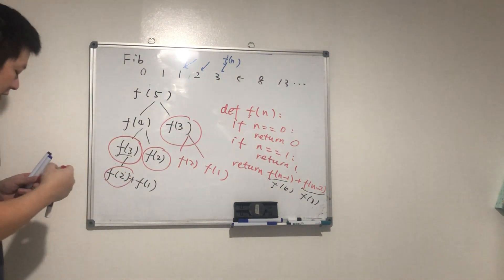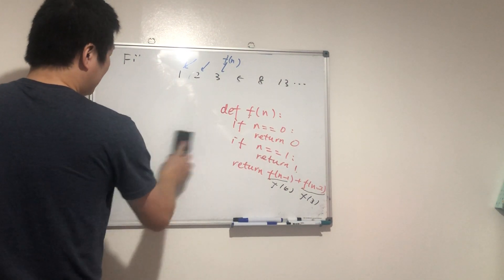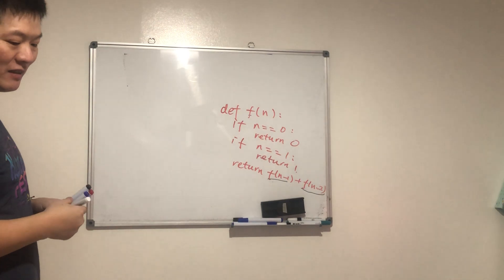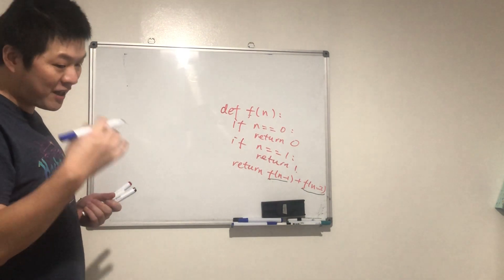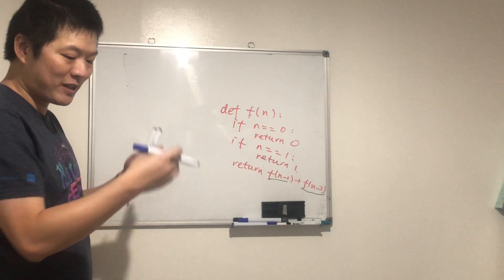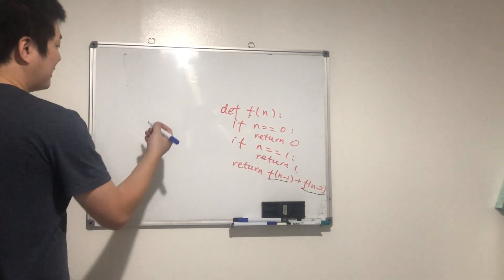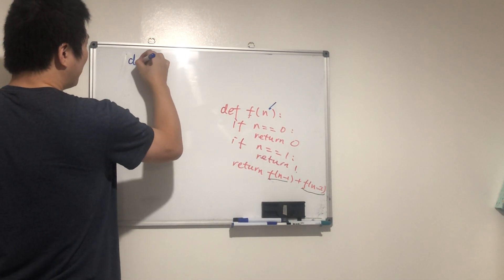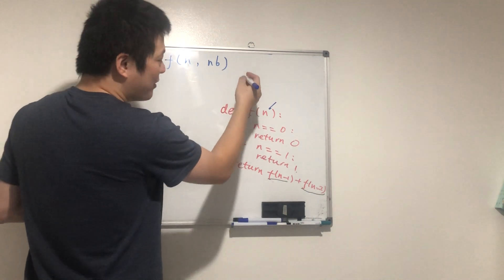Is there a way to avoid calculating the same value again and again? Yes — we can save the value, like putting it down in a notebook. First, if a value is not yet calculated, we calculate it. Once we have the value, we store it in the notebook. Later, instead of recalculating, we just look it up. Let's call it 'nb' for notebook.